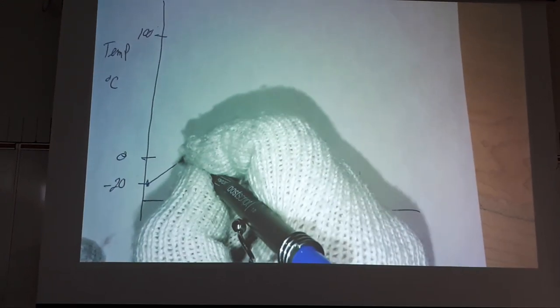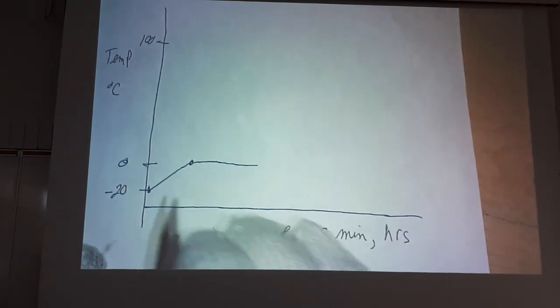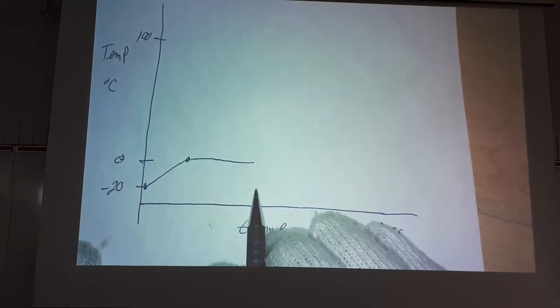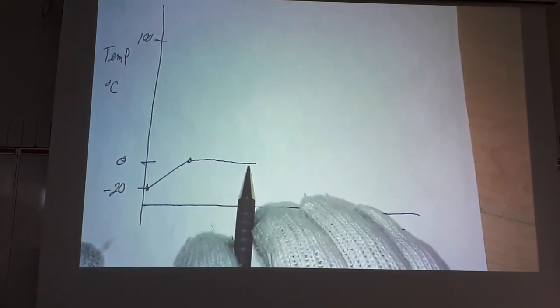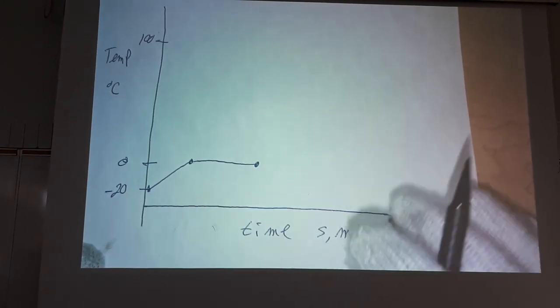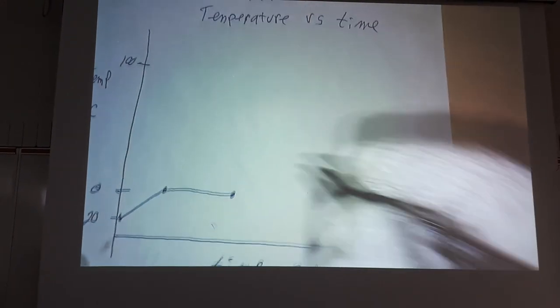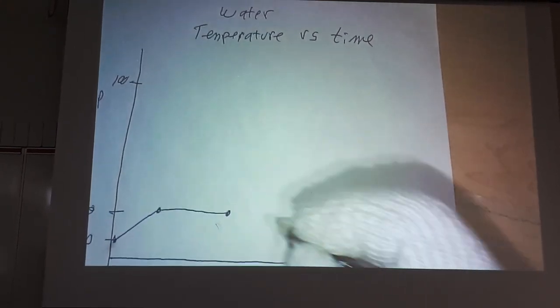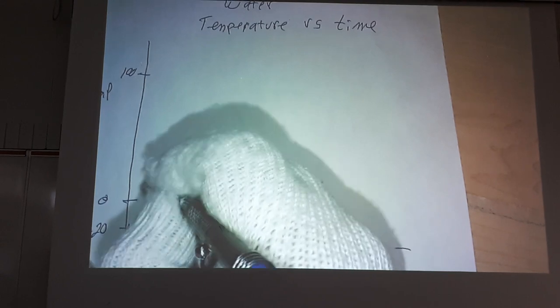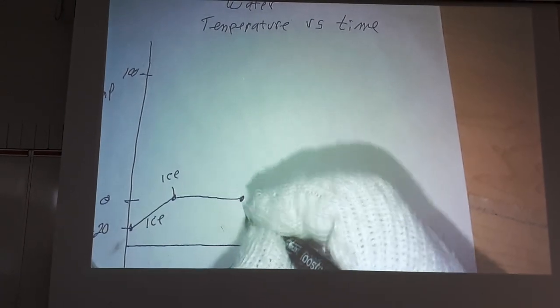And it's going to plateau. The temperature is going to plateau over time. Time is still continuing. Heat is still being added. But the temperature plateau is at zero. It's not going higher than zero. And it reaches this point. This is ice. At this point right here, we also have ice. And at this point, we'll have water.